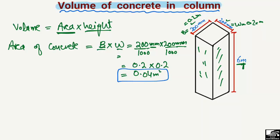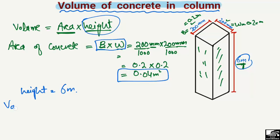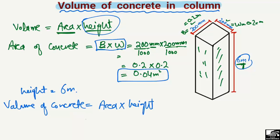Since this is a square column, we use the width times breadth formula. The height of the column is 6 meters. Now, to find out the volume of concrete in this square column, it is equal to the area of the concrete multiplied by the height — that is 0.04 square meters multiplied by 6 meters.